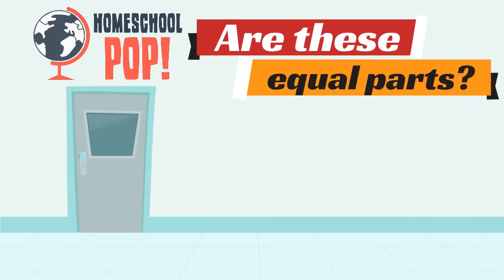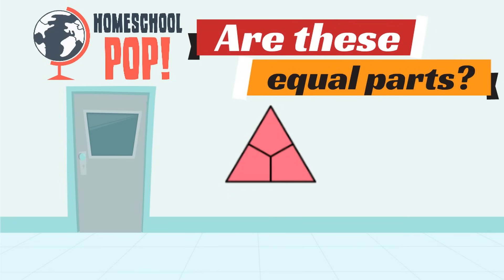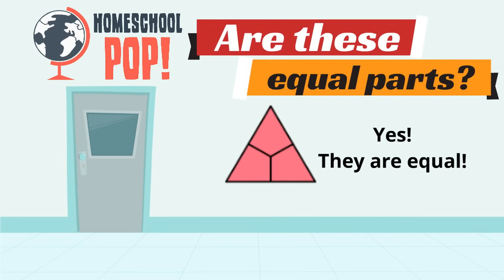Check out this picture — it's a picture of a triangle. How many parts does this triangle have? Three. Are these equal parts? Yes, they're equal parts. How do we know? The parts of the triangle are all the same size.